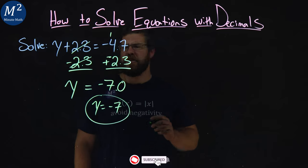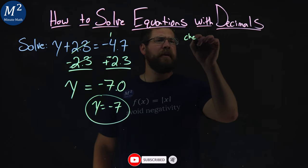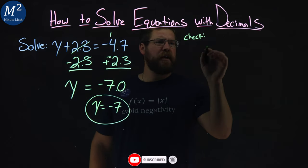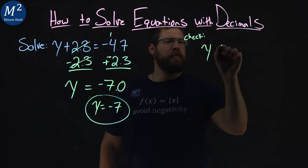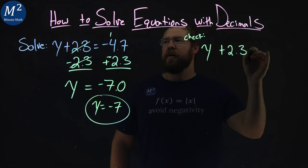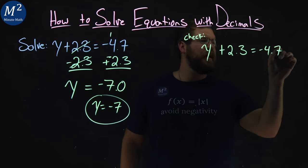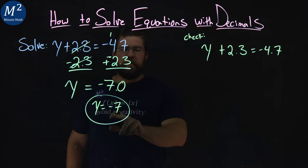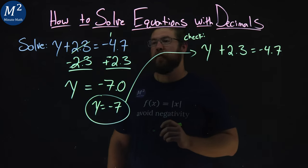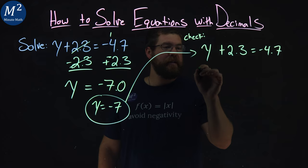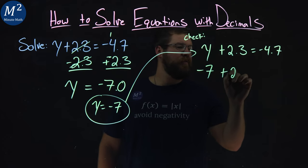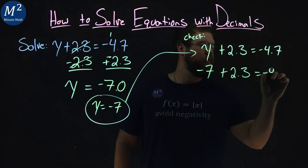All right. Well, now we need to check that, make sure that works. So let's check that. To check it, I rewrite my equation, y plus 2.3 equals negative 4.7. All right. So negative 7 for y, so I have negative 7 here plus 2.3 equals negative 4.7.